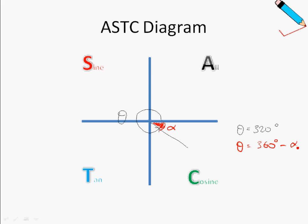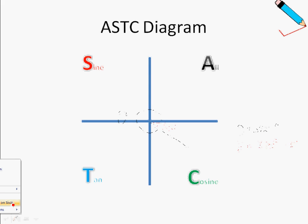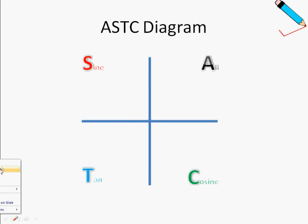In the fourth quadrant, theta equals 360 degrees minus alpha. So in the last few minutes, we've learned how to identify the angle we want, which is theta, and our basic angle alpha. Now let's explore what's so special about the four letters A, S, T, and C.